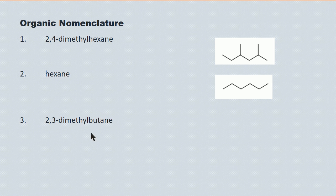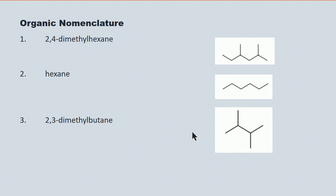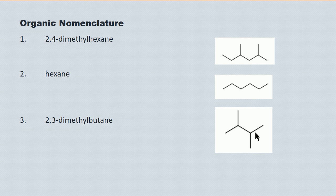2,3-dimethylbutane. The root 'but' tells me there's going to be four carbons in the parent chain — one, two, three, four. 2,3-dimethyl: here's a methyl attached to the second carbon and here's a methyl attached to the third carbon. In fact, it doesn't matter whether you count left to right or right to left — this is 2,3-dimethylbutane in either direction.